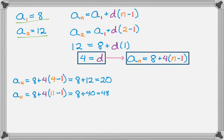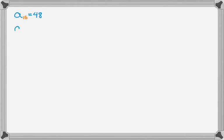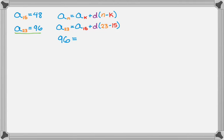Let's try one more example. Given a₁₅ = 48 and a₂₃ = 96. I'll write down the general formula: aₙ = aₖ + d(n-k). Now plug in: a₂₃ = a₁₅ + d(23-15). So 96 = 48 + d(8).